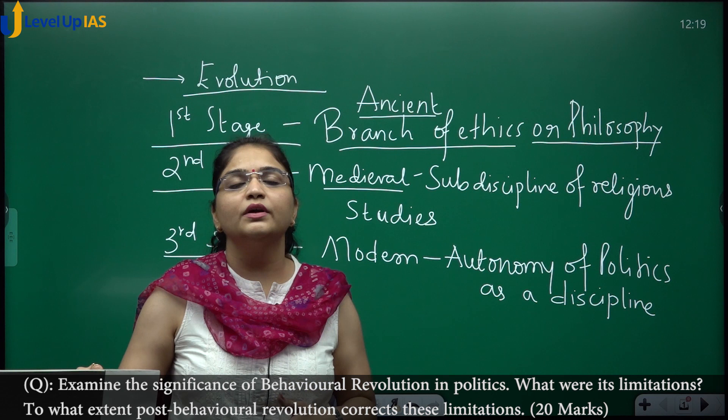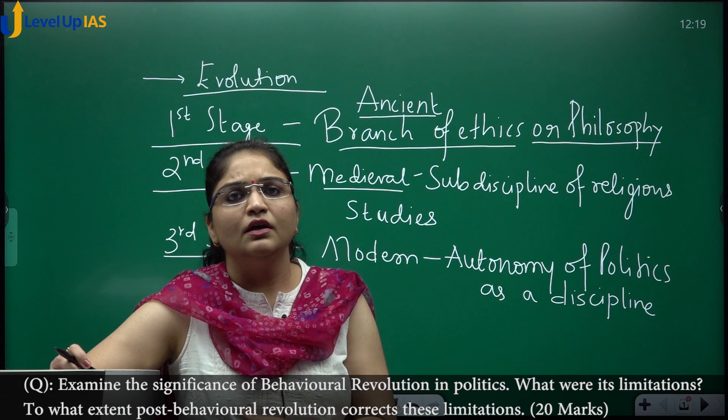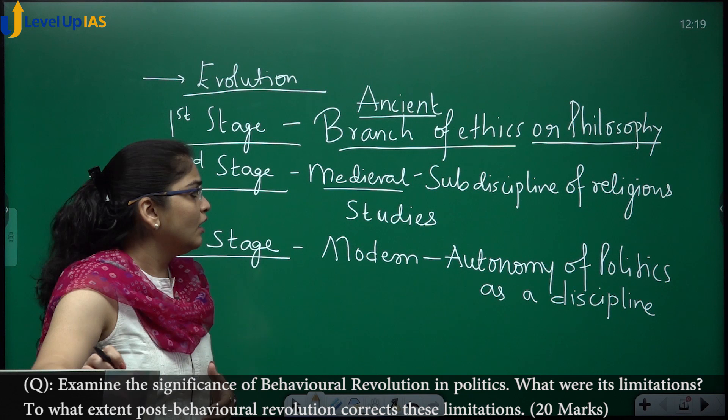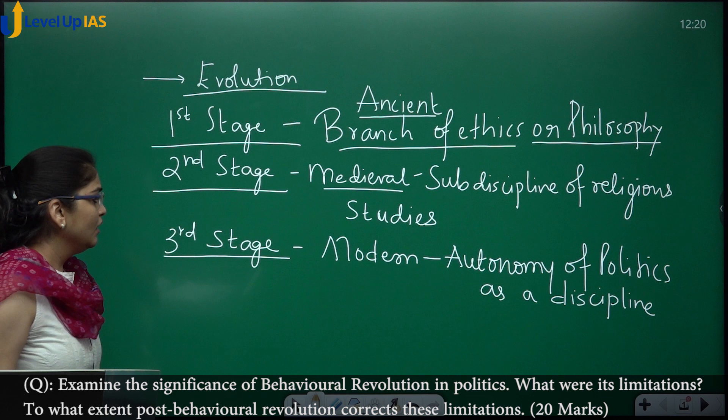In the second stage, we largely see the influence of religion. Political science became a sub-discipline of religious studies rather than an independent discipline. There was no autonomy — the church dictated all institutions. The church dominated the state and the king, so in the medieval age, politics becomes a sub-discipline of religious studies.